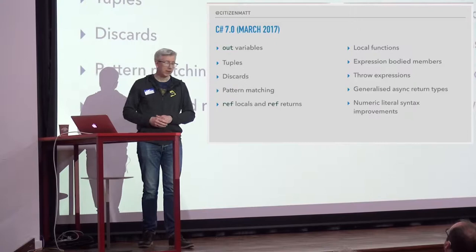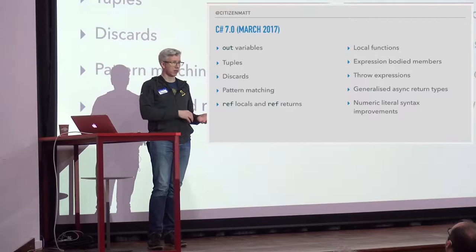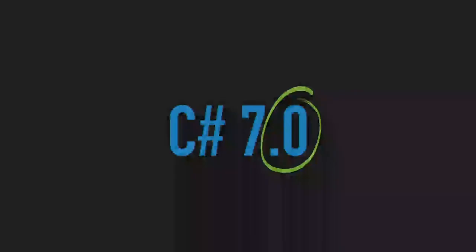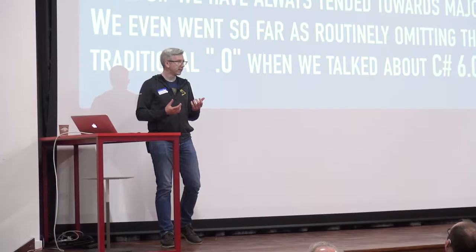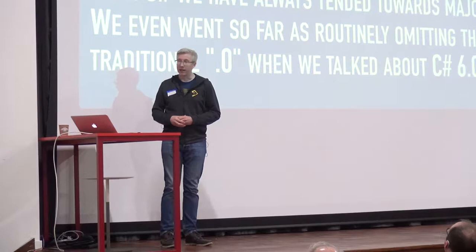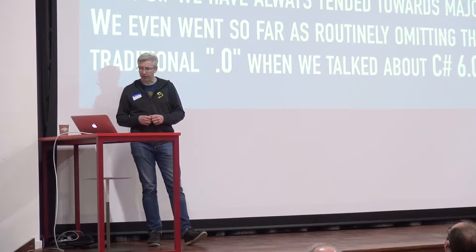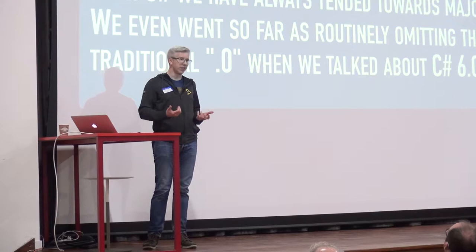That brings us to C# 7.0, released in March last year, with a bunch of interesting features. The big thing that came out of this was the '.0' — it's the significant part. They actually called it out. Traditionally they've tended towards major releases tied to Visual Studio releases, and because of those big-bang releases every couple of years, they routinely dropped the .0 specifier.